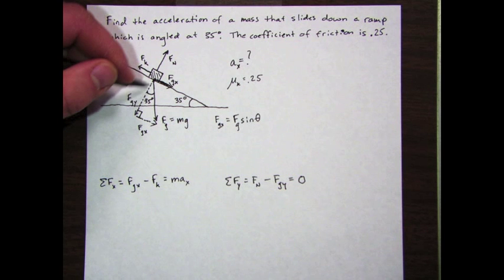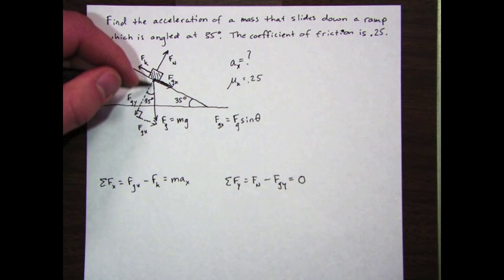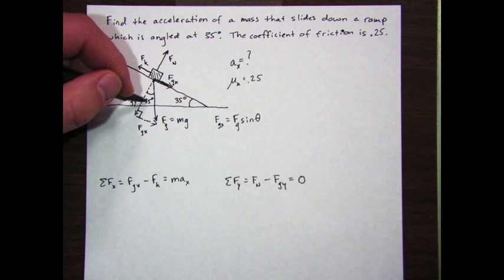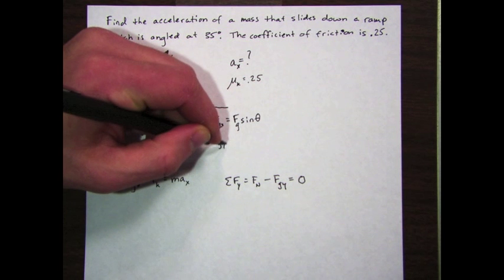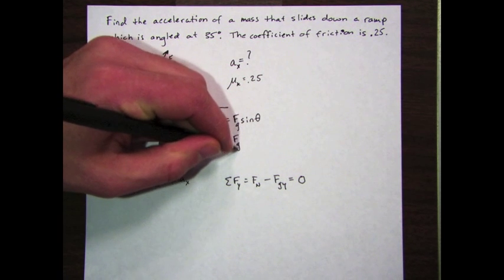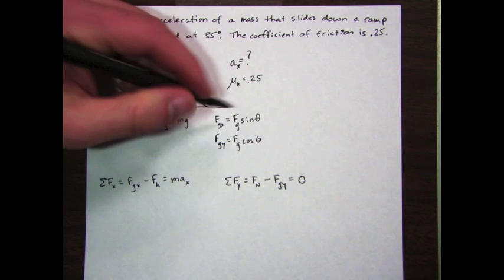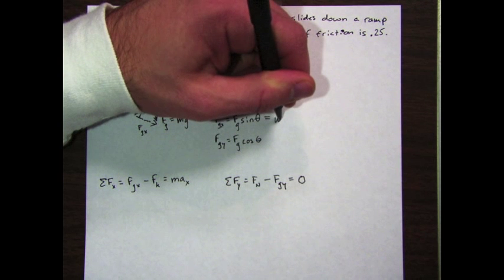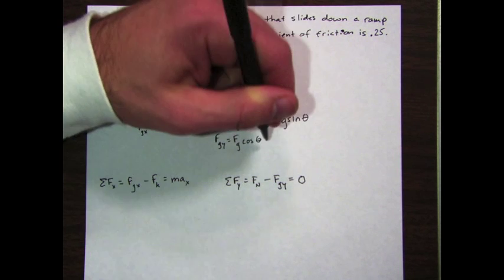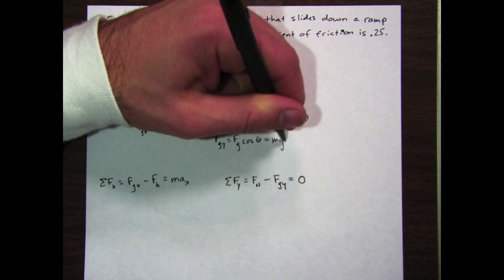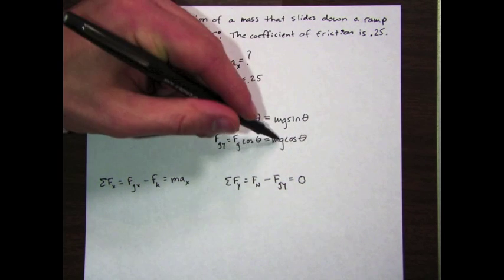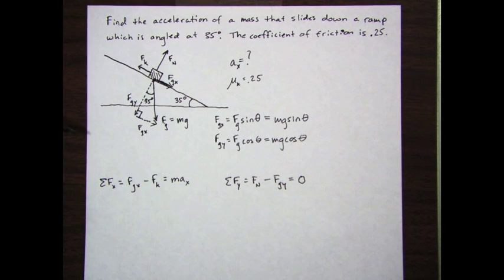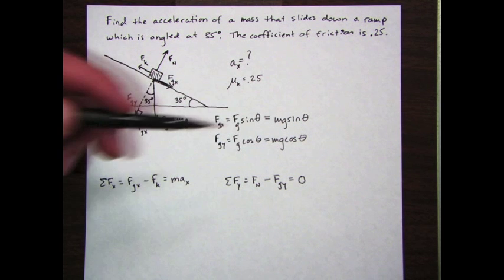F g sub x equals f g times the sine of theta. Likewise, f g y, which normally was associated with sine, is now cosine because that's the adjacent side to this angle. So my hypotenuse, f mg or f g, times the cosine of 35 will give me f g y. Remember f g equals mg, so I can just write this as mg sine theta and this will be mg cosine theta. I took mg and replaced f g.